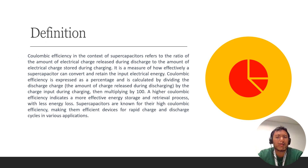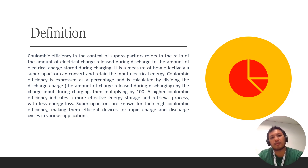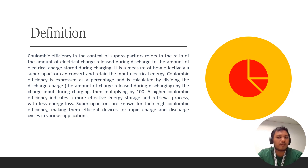So throughout this presentation you will know a little bit about the definition of coulombic efficiency, the formula, and some examples of how to plot it. By definition, coulombic efficiency in the context of supercapacitors depends on the ratio of the amount of electrical charge released during discharge to the amount of electrical charge stored during charging. A higher coulombic efficiency indicates a more effective energy storage and retrieval process with less energy loss.